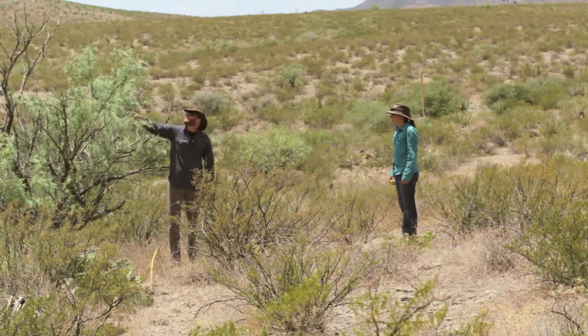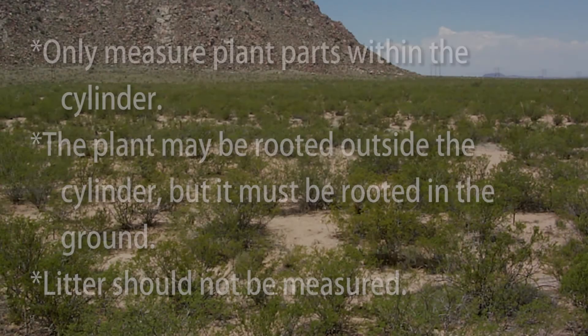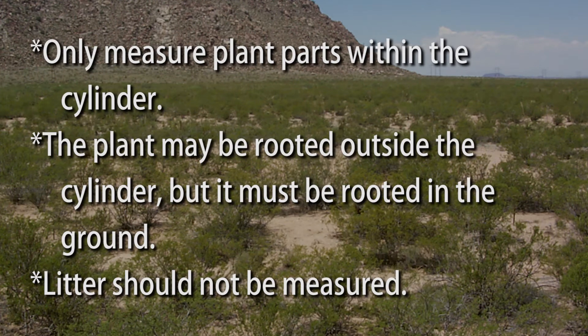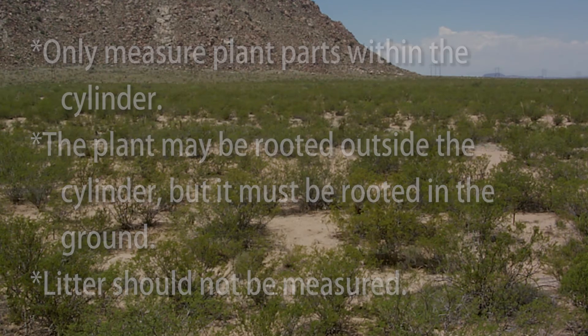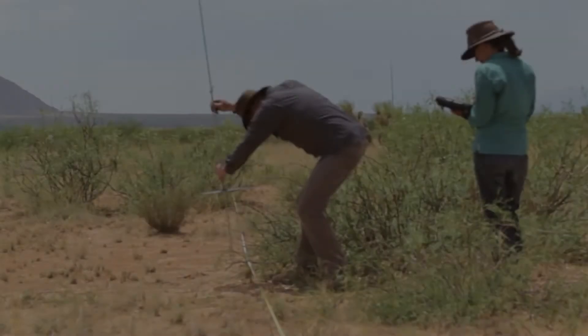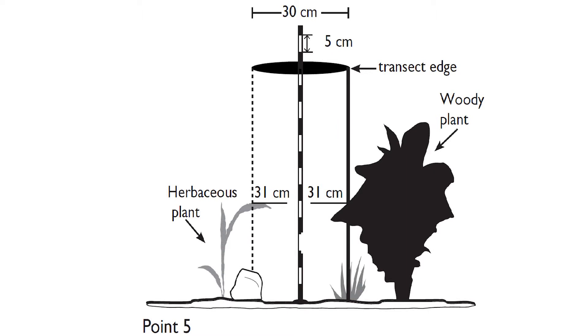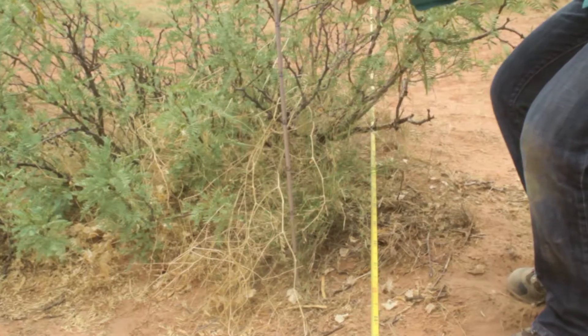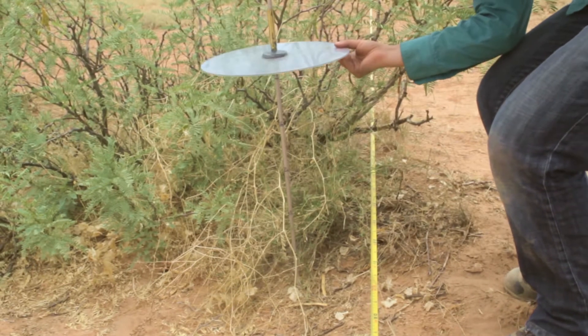The plant may be rooted outside the cylinder, but it must be rooted in the ground. Litter should not be measured. Measure the droop height of the plant. Do not move or stretch any part of the plant during your measurements. Measure the height of the plant from the point the rod touches the ground.